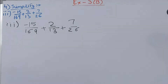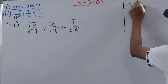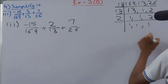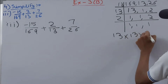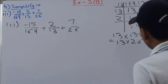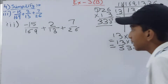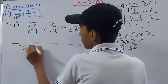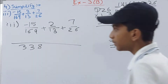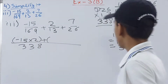All denominators are positive so we proceed to find the LCM of 169, 13, and 26. Dividing by 13 and then by 2 gives us LCM = 13 × 13 × 2 = 338. Now converting each fraction: 169 goes into 338 two times, so we do -15 × 2.